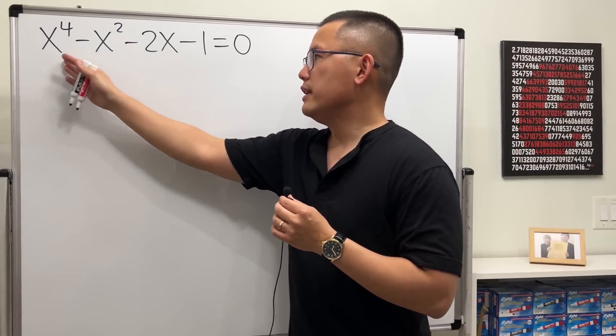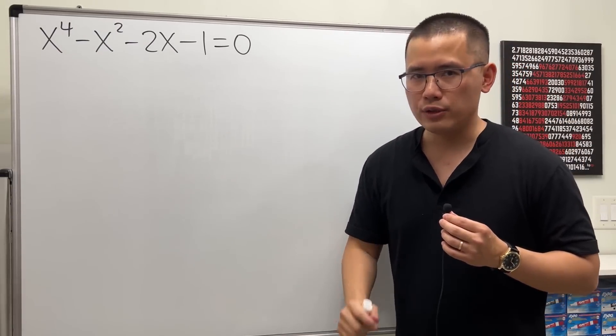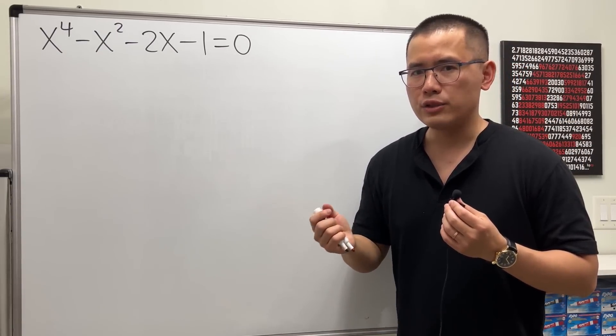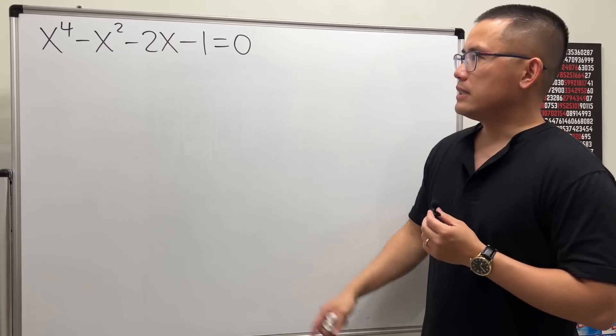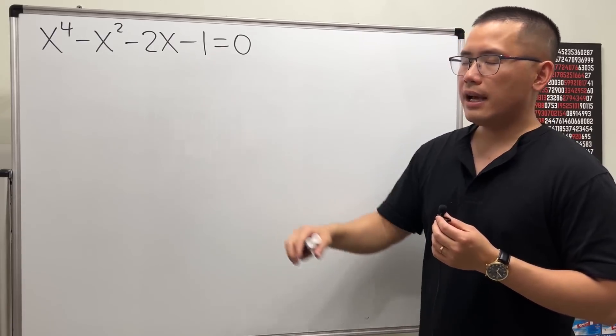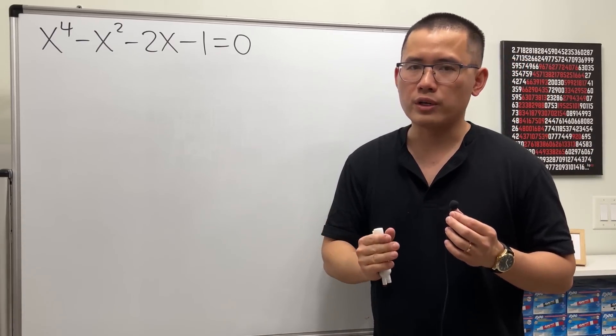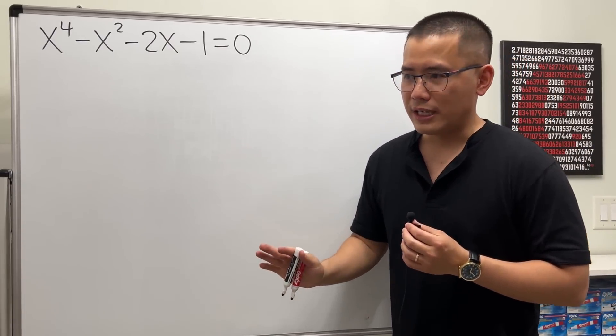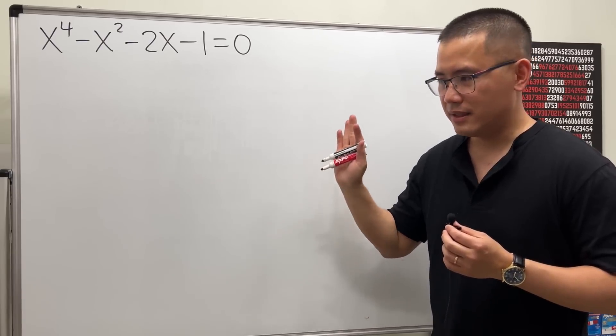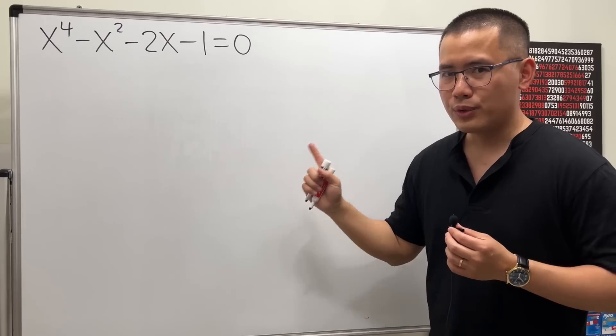First off, this equation has no rational solution, so we cannot use the rational zero theorem. Second of all, we can actually factor it as a product of quadratic times quadratic, and I'm not going to do that. You can watch my other video for it, but not here.